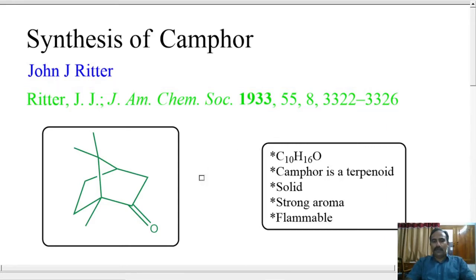The molecular structure of camphor is like this and the molecular formula is C10H16O. Camphor is a terpenoid and a solid with a strong aroma and it is flammable.